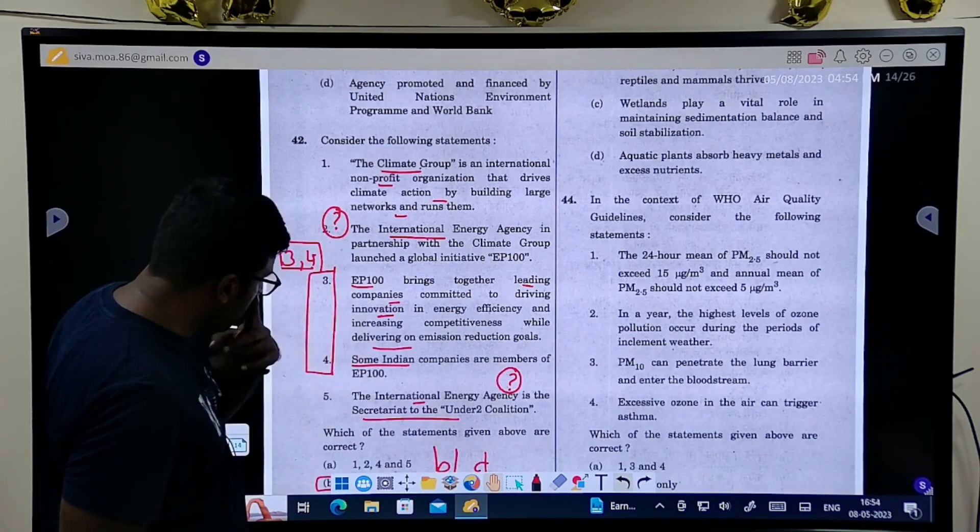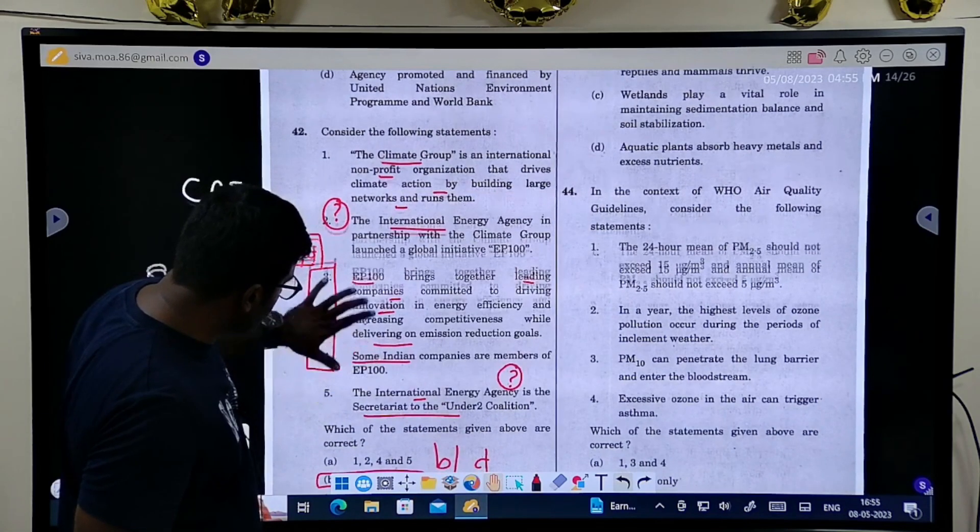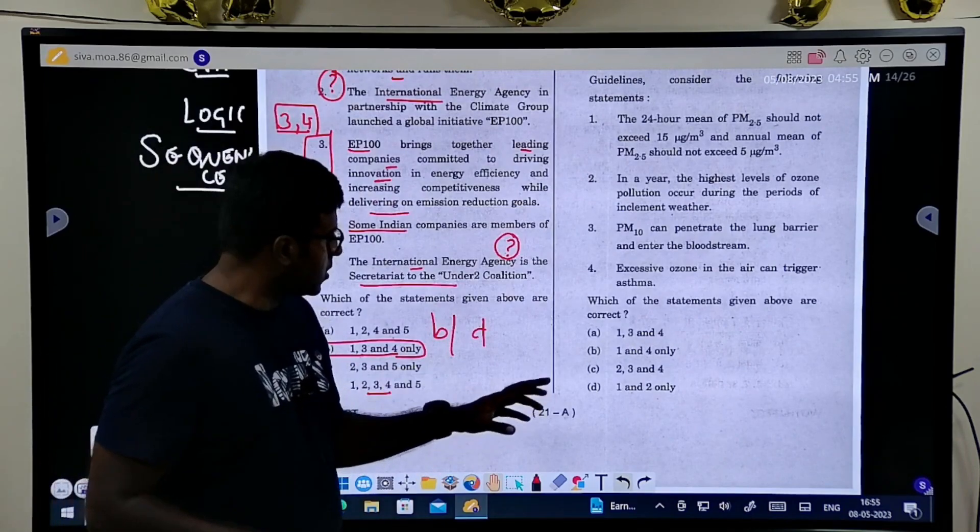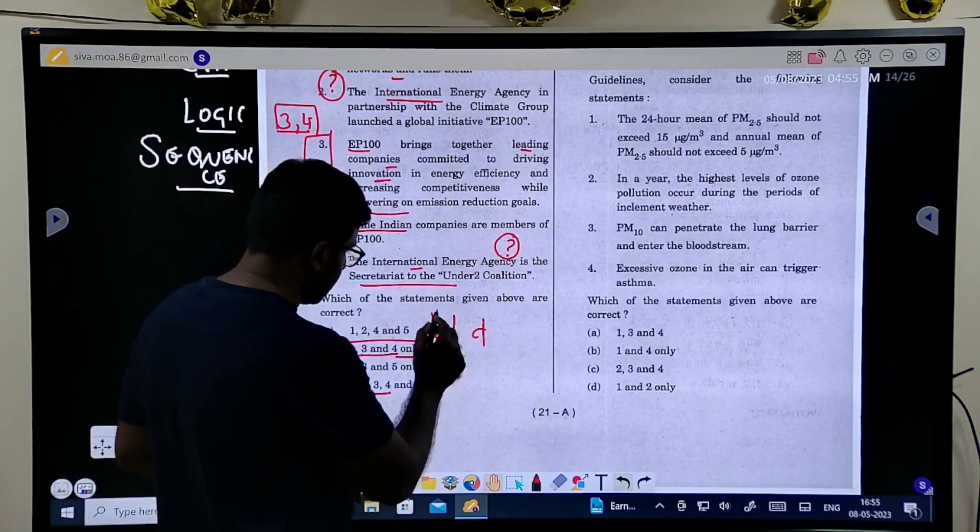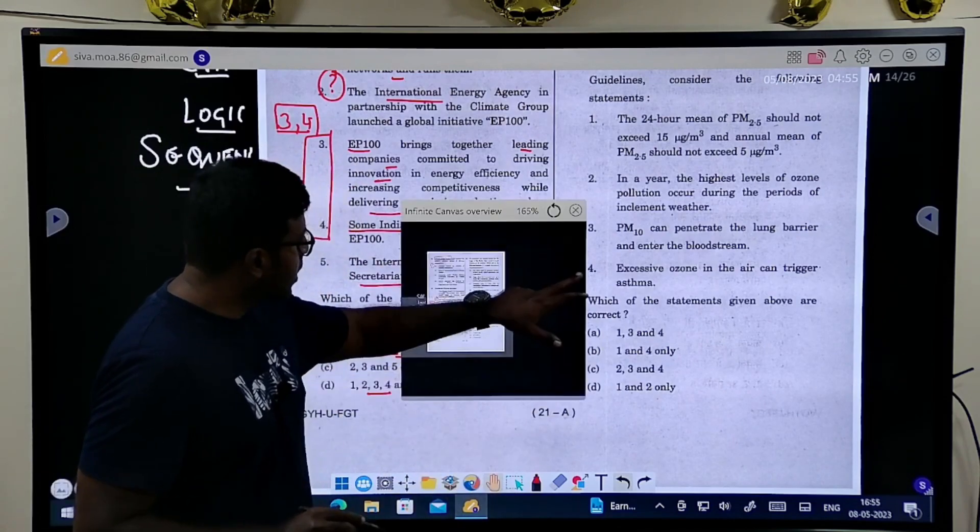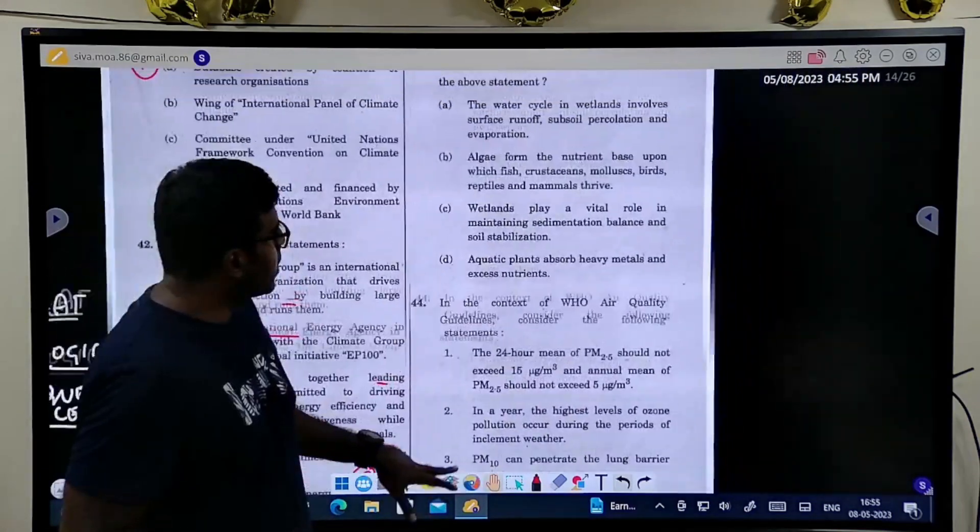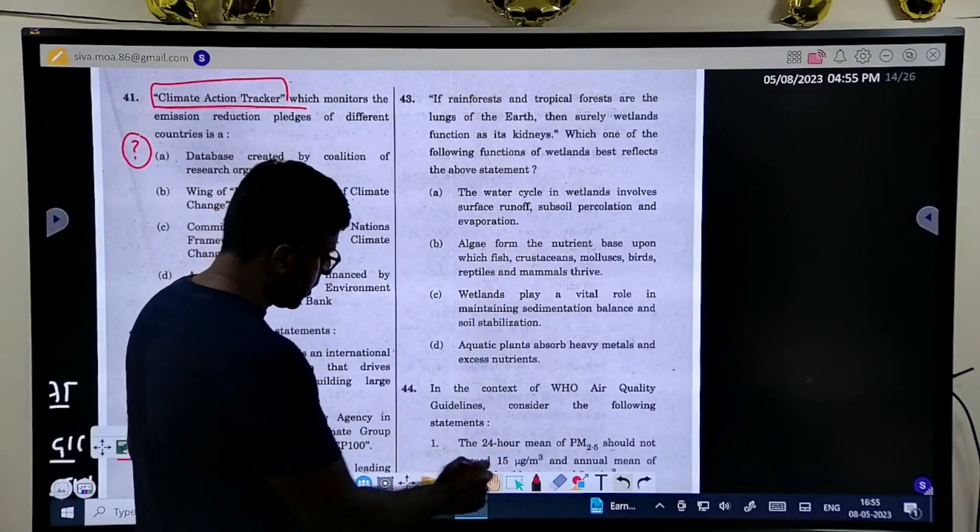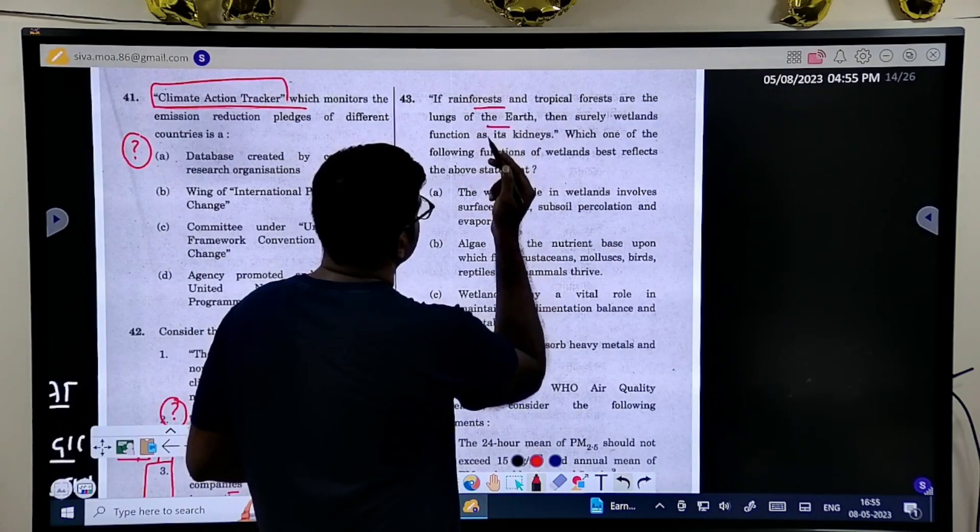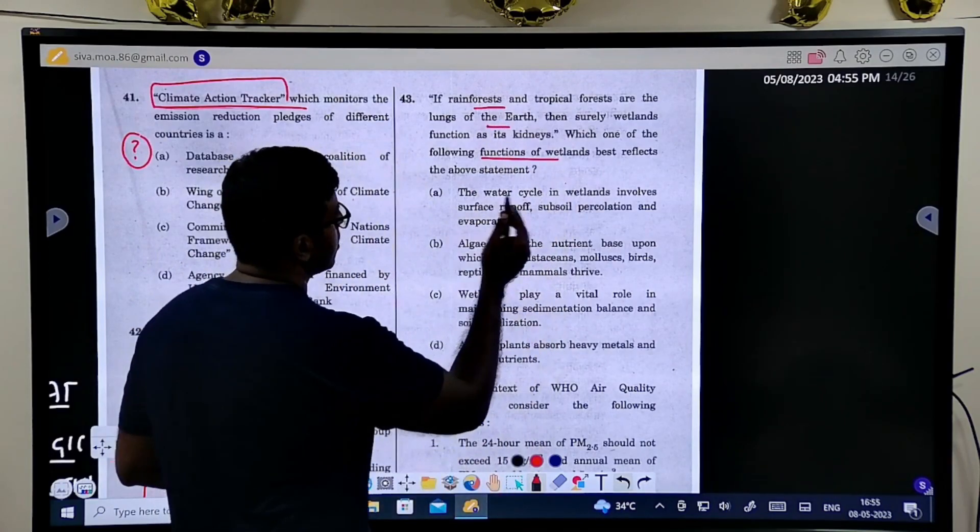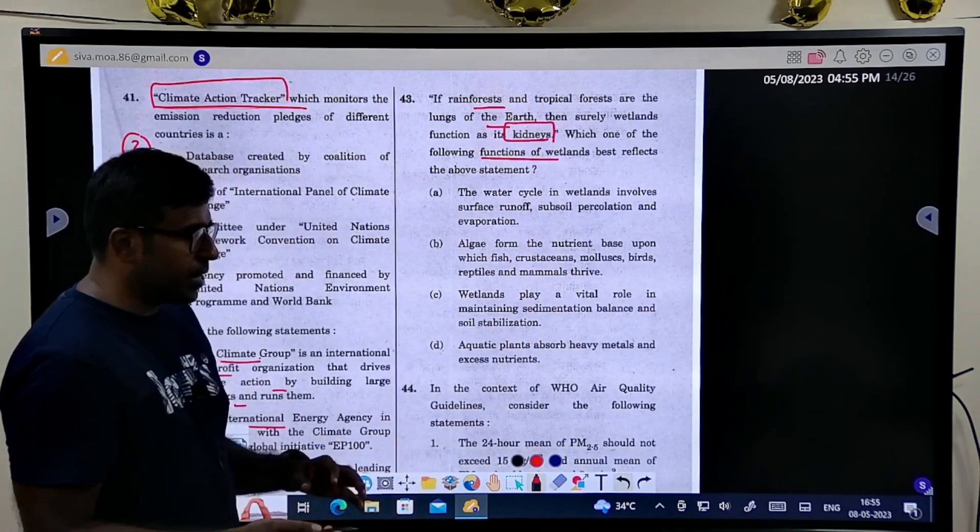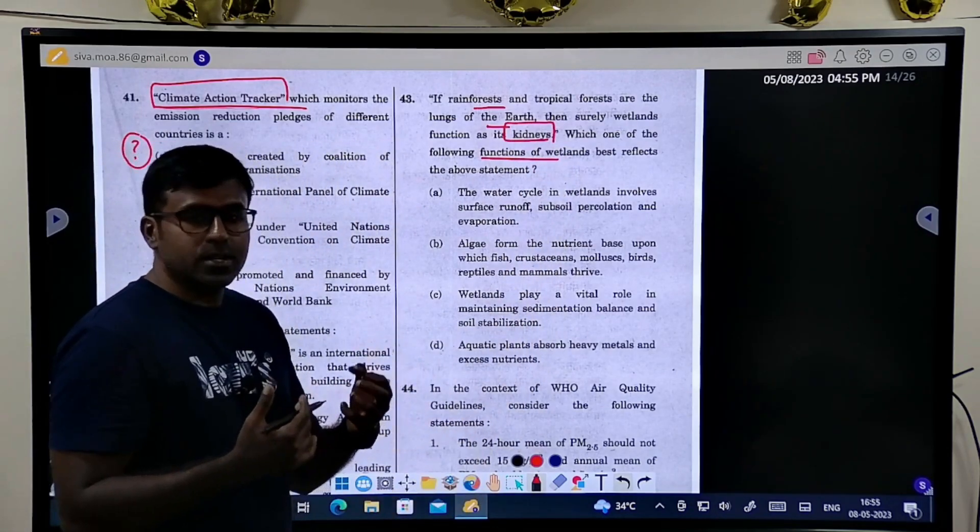When 3 and 4 are together, 1, 3, 4 seems actually logical. This is what is the answer as well. This is how you should derive the answer. Inside the hall, do not panic and get this answer in this way. Now coming to this, if rainforest is the lungs of the earth, wetlands are the kidneys.